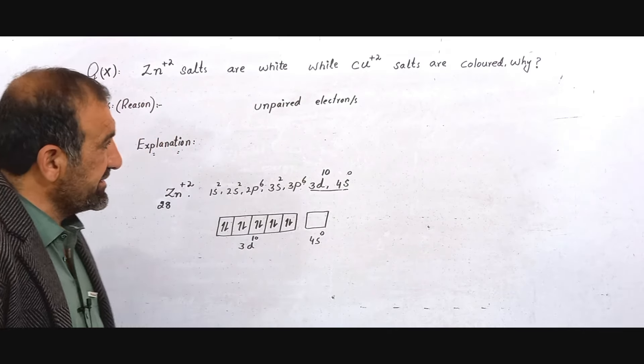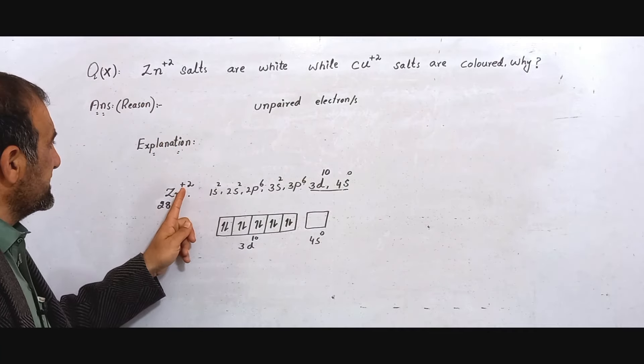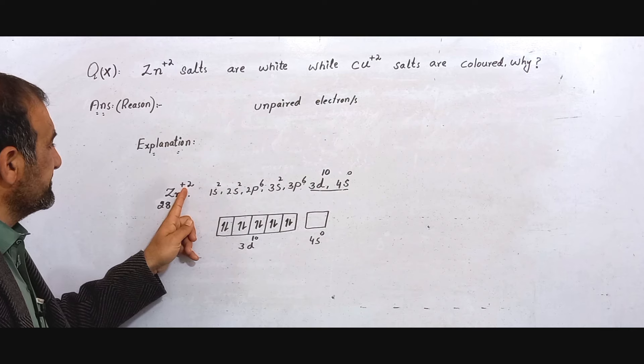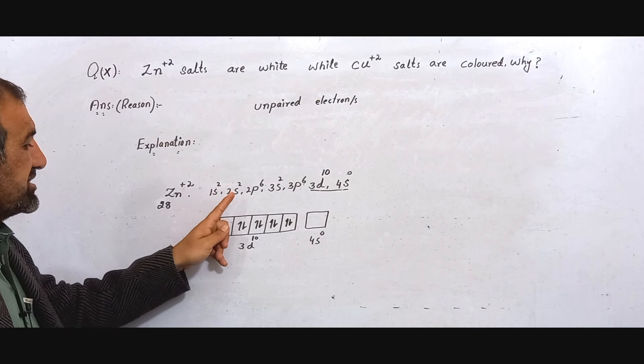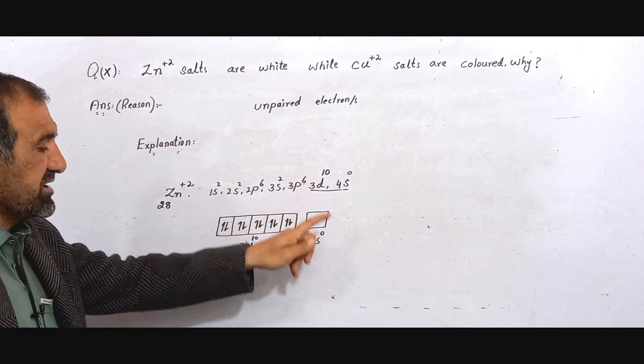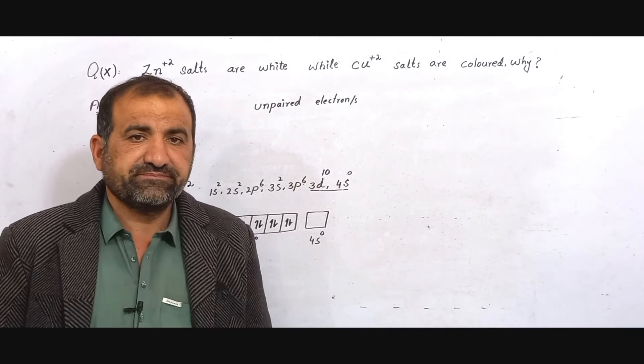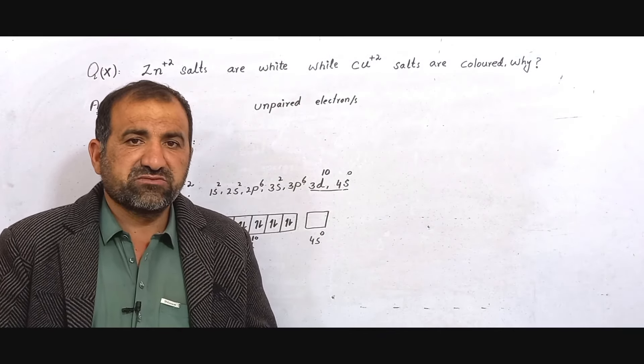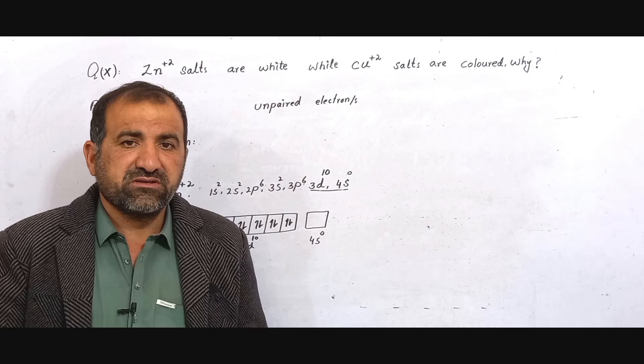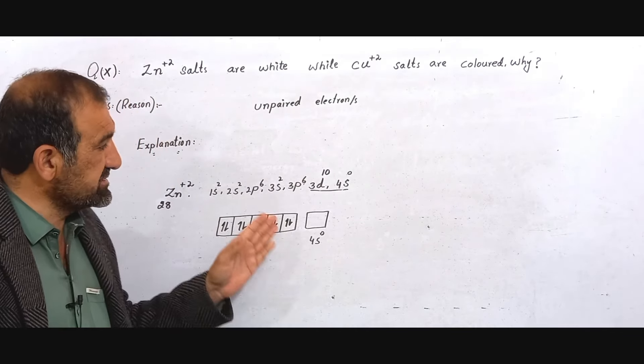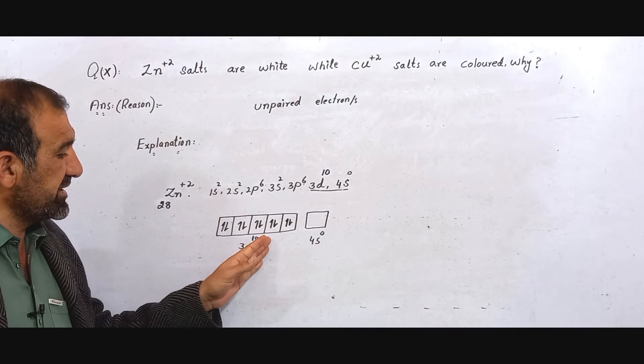Look at here. While the Cu²⁺ has unpaired electrons, Zn²⁺ has no unpaired electron due to its electronic configuration. Therefore the Zn²⁺ forms colorless white compounds, white salts.